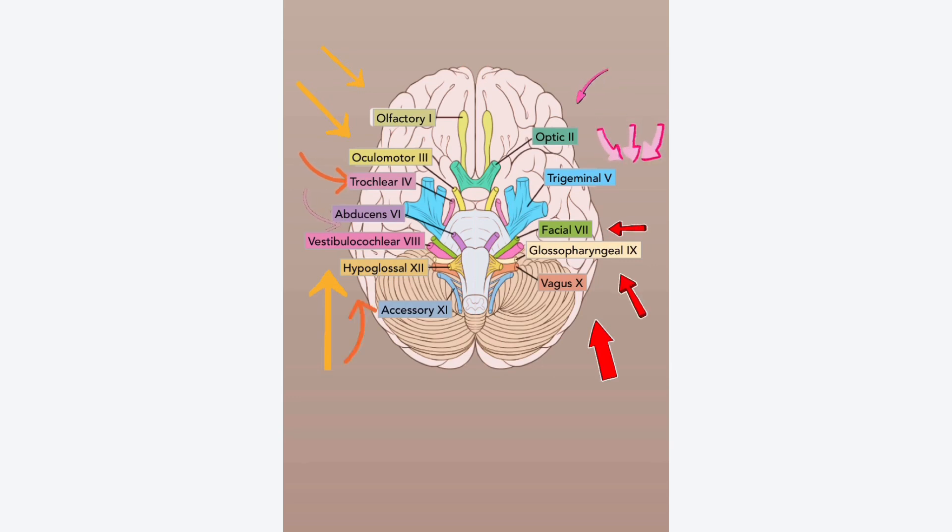Hearing. Nine, ten, and twelve: glossopharyngeal, vagus, hypoglossal. So remember tongue movement, swallowing, gag reflex, and autonomic function. For eleven, remember shoulder shrugging, trapezius, sternocleidomastoid, and spinal accessory.